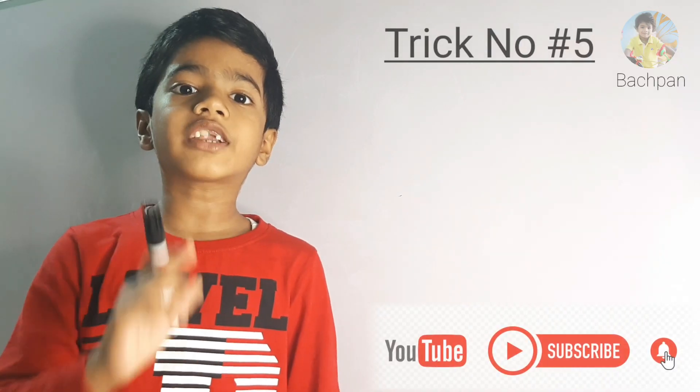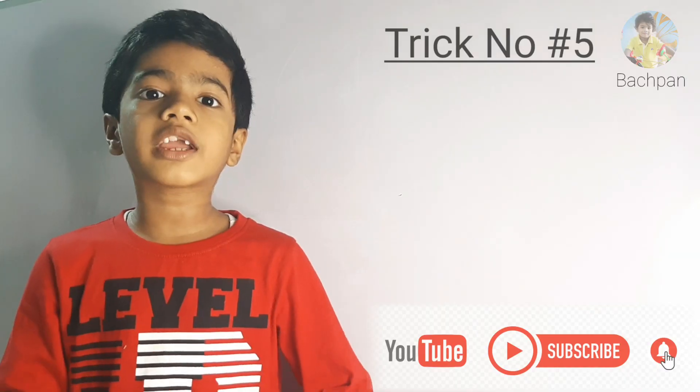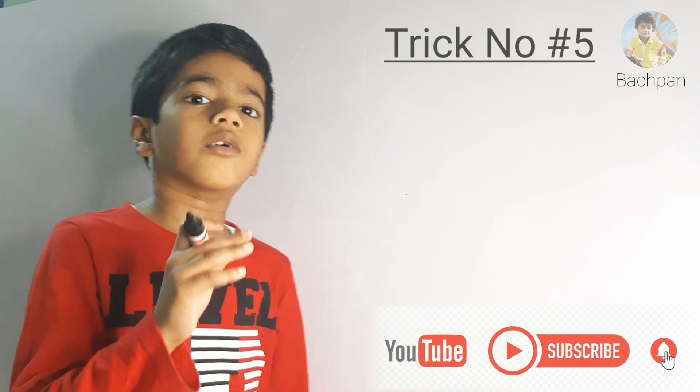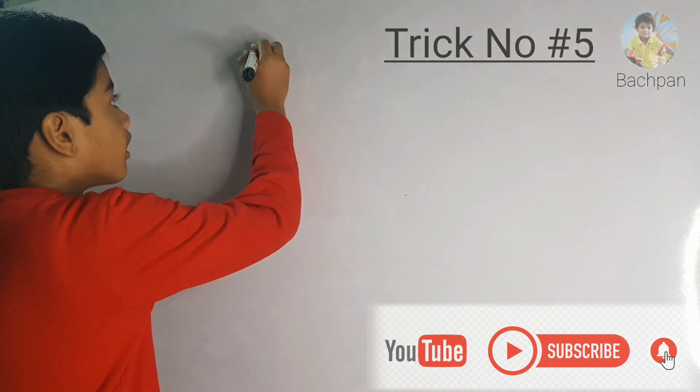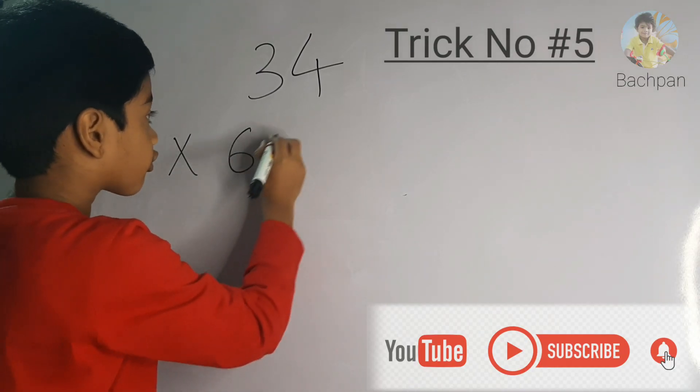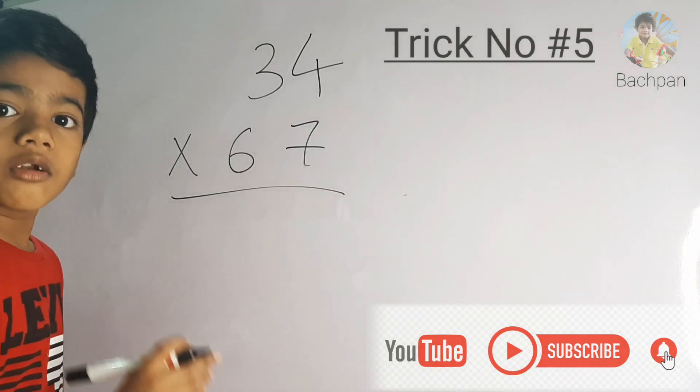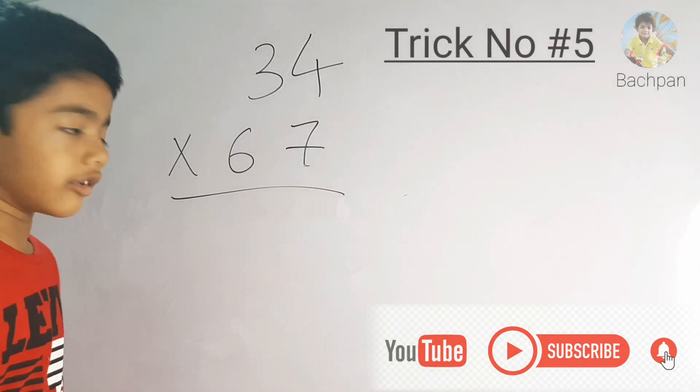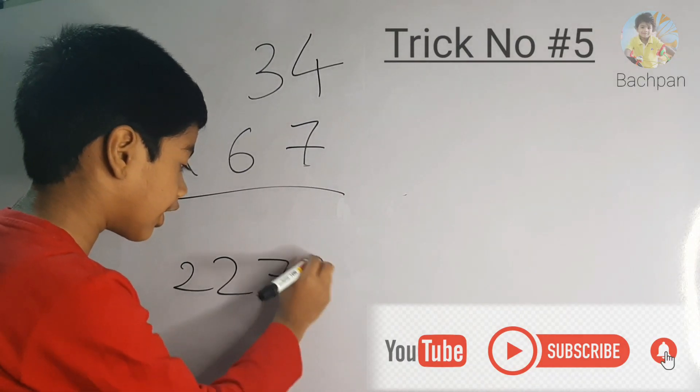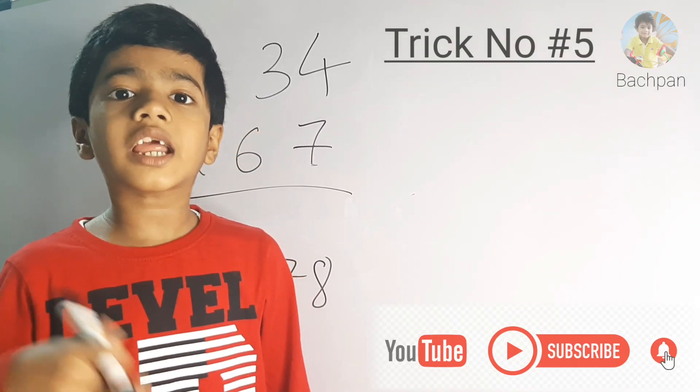Vedic math trick number 5. This is the master trick. It will work in any 2-digit multiplication. Let's take a demo. So the answer is 2278. I will tell you the master trick in my next video.